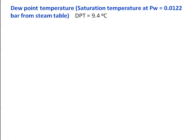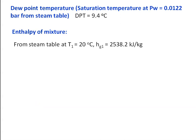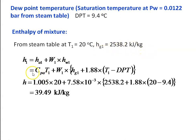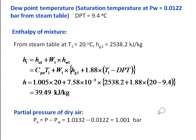Dew point temperature is the saturation temperature at Pw = 0.0122 bar, which from the steam table is 9.4°C. Enthalpy of the mixture: from the steam table at T1 = 20°C, HG1 = 2538.2 kJ/kg. H1 = CPA × T1 + W1 × (HG1 + 1.88 × (T1 − dew point temperature)) = 1.005 × 20 + 7.58 × 10⁻³ × (2538.2 + 1.88 × (20 − 9.4)) = 39.49 kJ/kg. Partial pressure of dry air: PA = P − Pw = 1.0132 − 0.0122 = 1.001 bar.